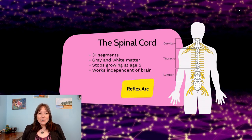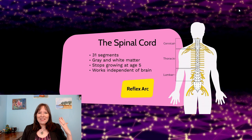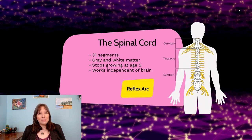The brain is not the only part of our central nervous system — the other major component is the spinal cord. The spinal cord is broken into 31 segments, contains both gray and white matter, and stops growing at about age five. After that, what grows is just the muscles and support structures around it. So it's its own mature structure from a very young age and works independently of our brain.